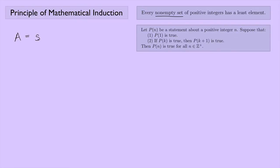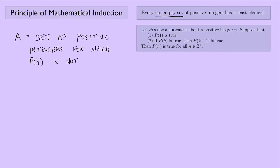Let B be the set of positive integers for which P(n) is not true. We're going to try and get a contradiction. We can use the well-ordering principle, so we know there must be some element in this set that is the least element — the smallest thing. Let's call that least element M.